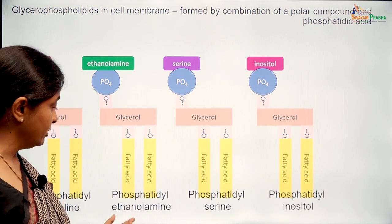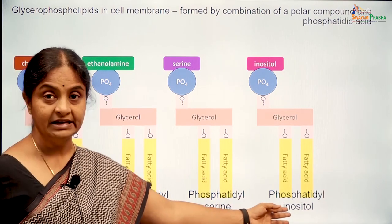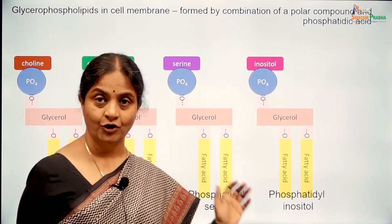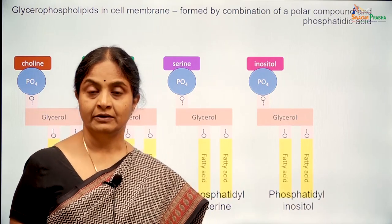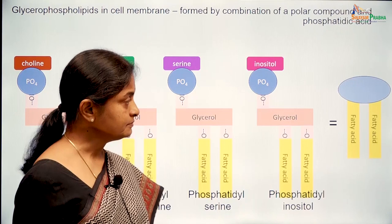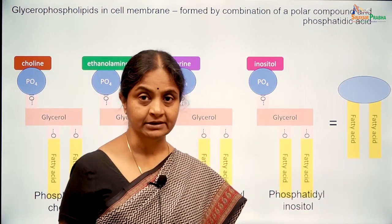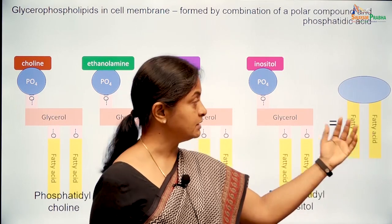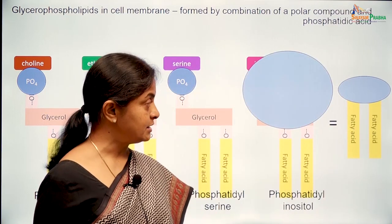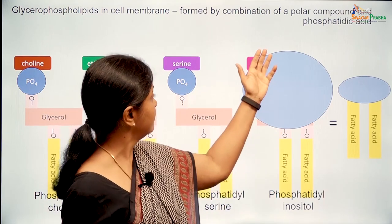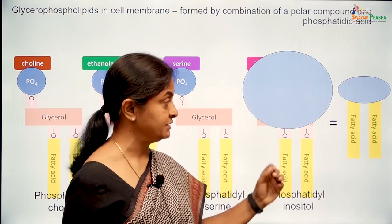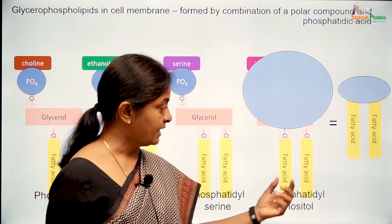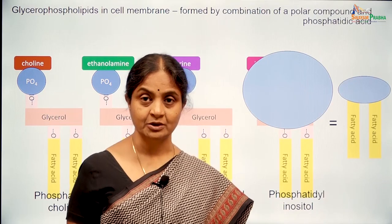So we have phosphatidylcholine, phosphatidylethanolamine, phosphatidylserine and phosphatidylinositol. These are the four glycerophospholipids which make up the cell membrane and form the predominant phospholipids of the cell membrane. Returning to the cartoon of the bilayer membrane with the blue bubble and the tails — the blue bubble, the hydrophilic end, is formed by glycerol and the phosphoserine or phosphoethanolamine moiety. That is the hydrophilic region which dissolves in the fluids inside and outside, and the fatty acids make up the hydrophobic region which dissolves in each other.